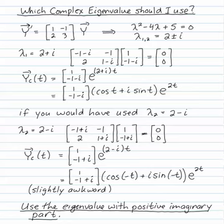When people first see the technique of using complex eigenvalues, first you're relieved that you don't have to compute an eigenvector for both eigenvalues. But then the next question is, which eigenvalue should I use to compute the eigenvector? The best is to use the eigenvalue with the positive imaginary part, and I'll show you why.